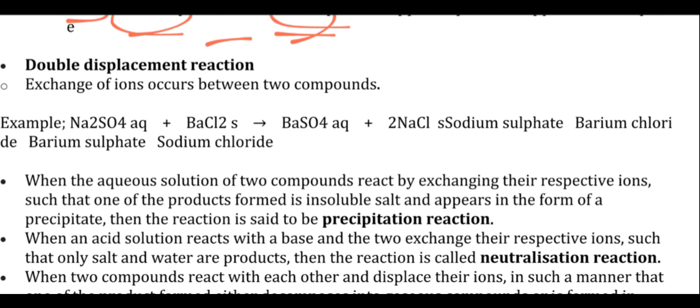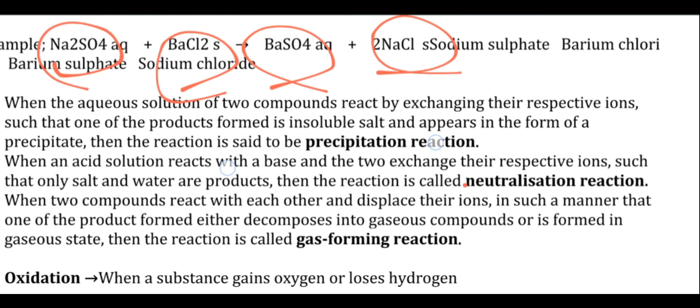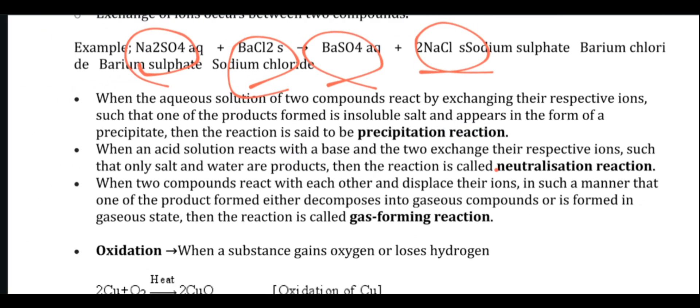Double displacement reaction is when the exchange of ions occurs. For example, sodium sulfate plus barium chloride gives barium sulfate and sodium chloride. When aqueous solutions of two compounds react to exchange their respective ions, and they sometimes form insoluble salt, that's called precipitation reaction. When precipitate forms, we also call it precipitation reactions.